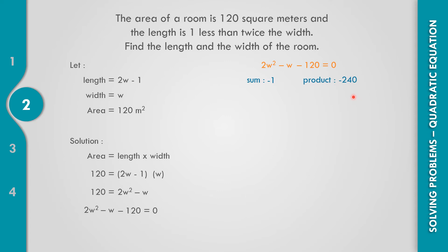Think of a factor where the product is negative 240 and the sum is negative 1. The first factor of 2W squared is 2W times 2W. The factors are 15 and negative 16: 15 times negative 16 equals negative 240, and 15 minus 16 equals negative 1.